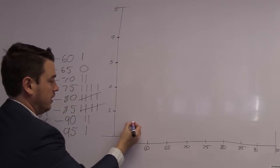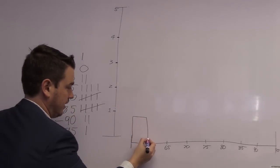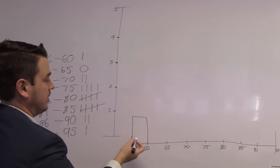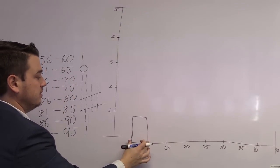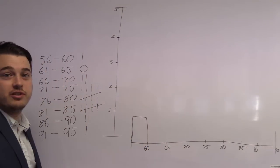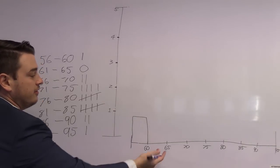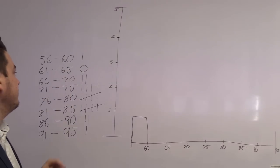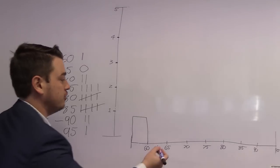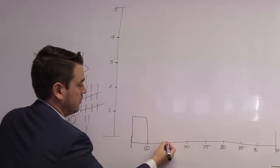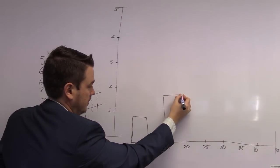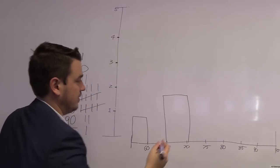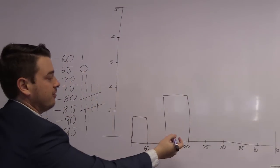A little box like that for that first one, because this bin only has one observation that falls in it. The next part is zero, so we don't need to draw one. Then between 66 to 70 we have two, so we line up with two up there. Then we have four.